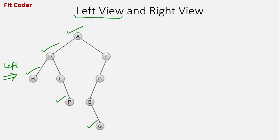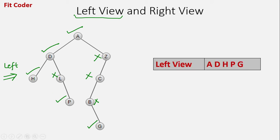Because D is in front of Z, so Z will be hidden. Similarly, H is in front of L and C, so these will be hidden. P is in front of B, so B will be hidden. So the nodes that will be visible are A, D, H, P, and G. This is the left view of this tree.